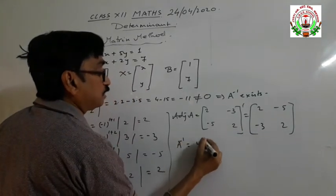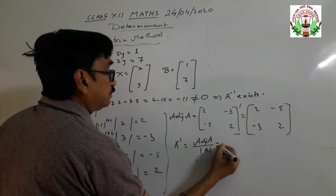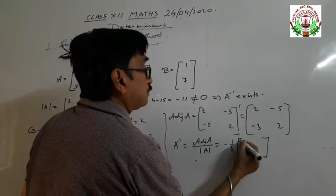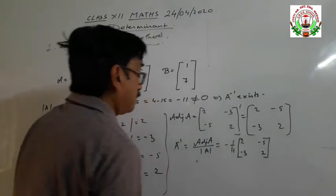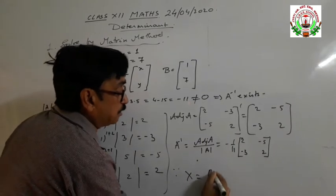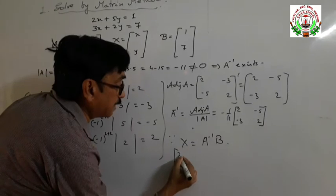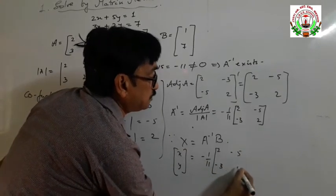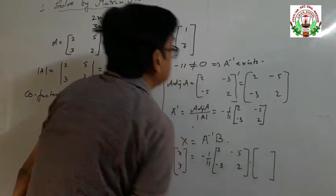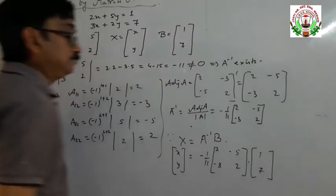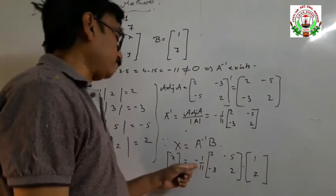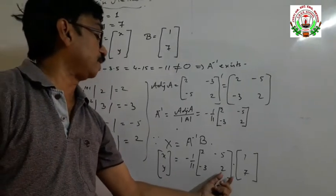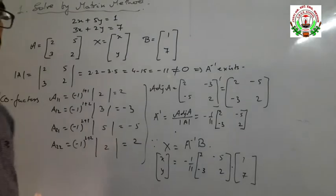The inverse formula is adjoint of A divided by the determinant value of A. The determinant value is minus 11, so A inverse equals minus 1 by 11 multiplied by the adjoint matrix 2, minus 5, minus 3, 2. Since we know X equals A inverse times B, listen carefully: do not put minus 1 by 11 inside the elements. First multiply the matrices and then handle the scalar factor afterwards.